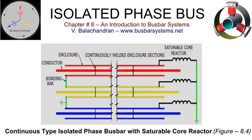A saturable core reactor is installed, designed to operate at the knee point voltage of the reactor during normal operating enclosure currents. Under normal operation, such an arrangement will limit the enclosure currents and consequently the enclosure losses to a considerable extent. Under fault, the enclosure voltage rises and the reactor saturates, providing a low impedance path for the enclosure currents and offering shielding under short circuit conditions. Such a system, though patented, has not been put into commercial operations.